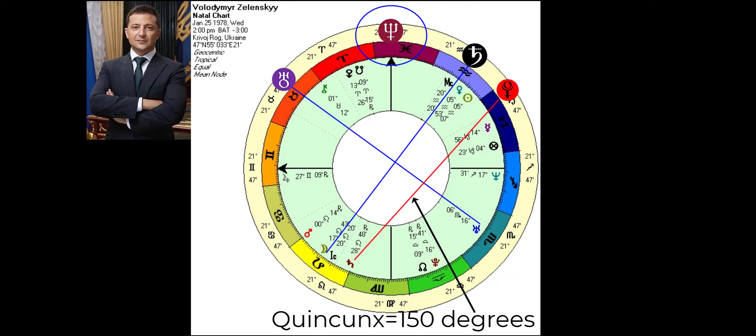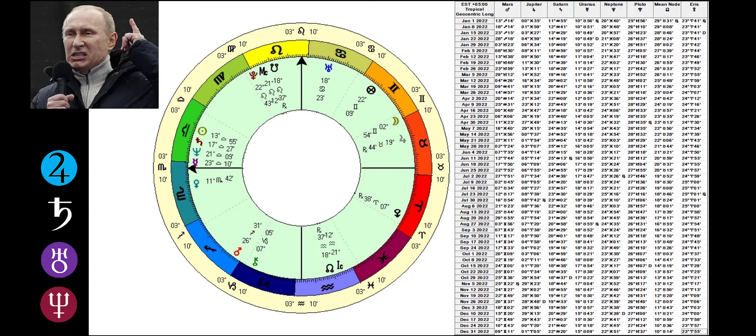But when we look at Putin's chart, only a quick glance reveals not only a present quincunx is cyclically concurrent with the launching of this war in Ukraine, but worse still, that there are multiple quincunxes still to kick into gear during the months and even years ahead.